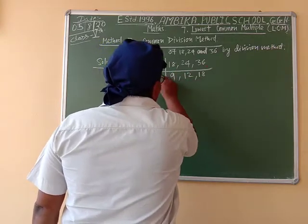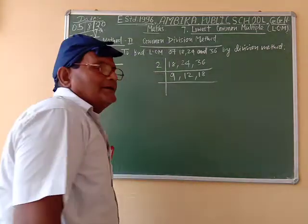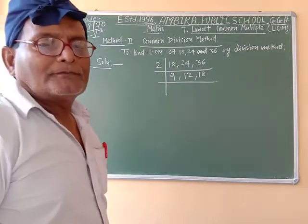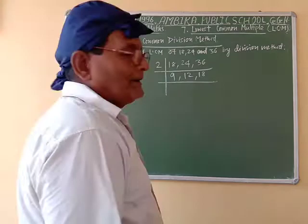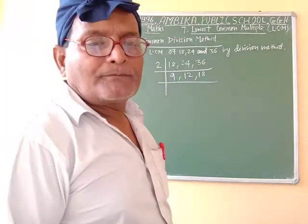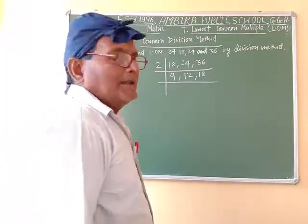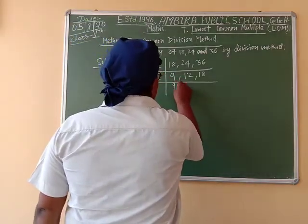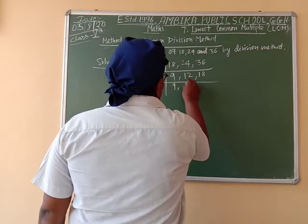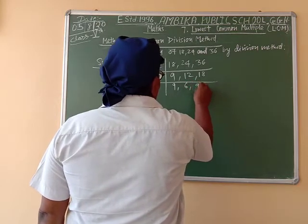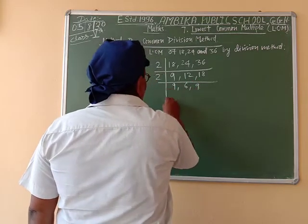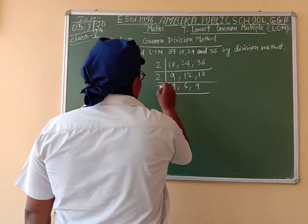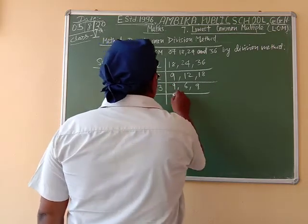Again we divide by 2, getting 9, 12, 18. Again we divide by 2, getting 9, 6, 9. Again we divide by 3.